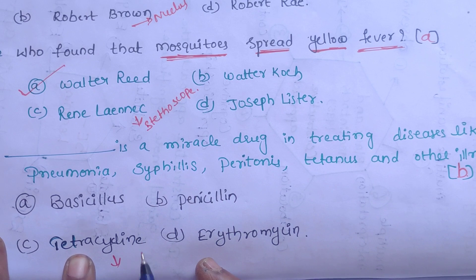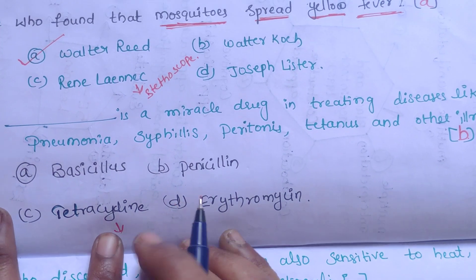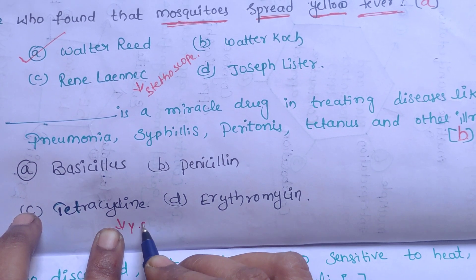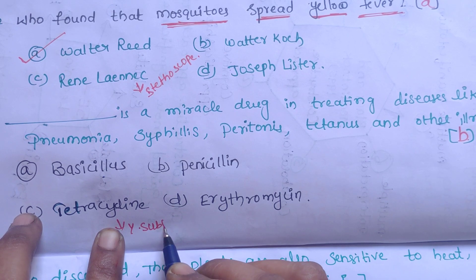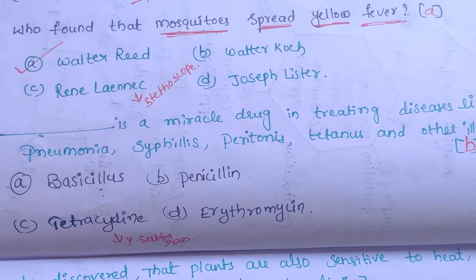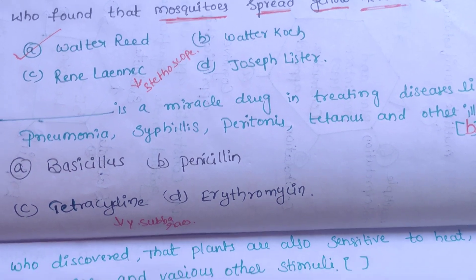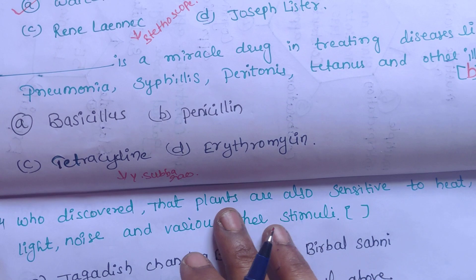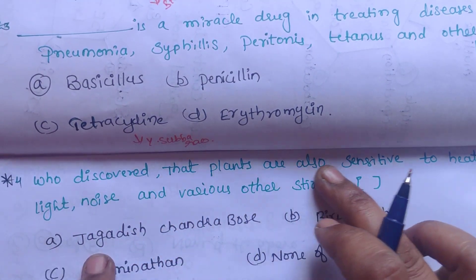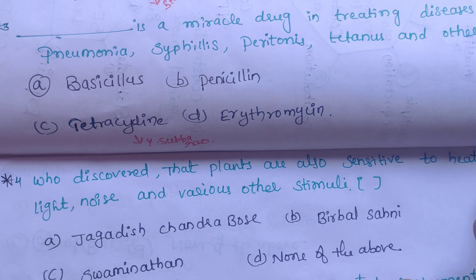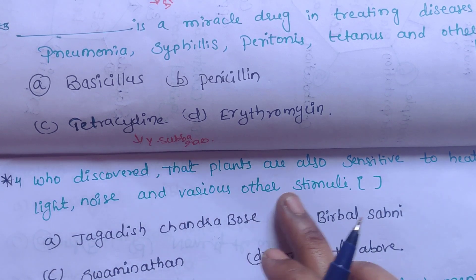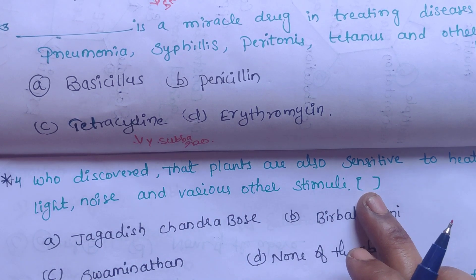Tetracycline was discovered by Yellapragada Subbarow, who belongs to Andhra Pradesh state. The next question is: who discovered that plants are also sensitive to heat, cold, light, noise, and various other stimuli?